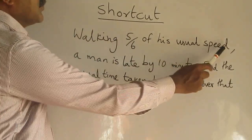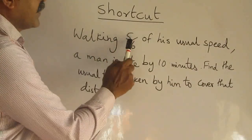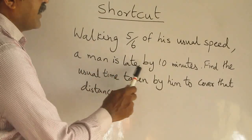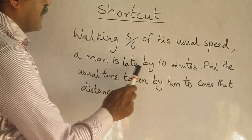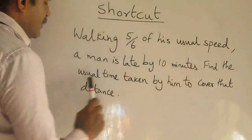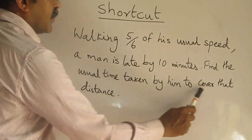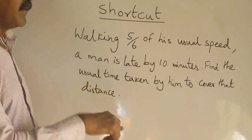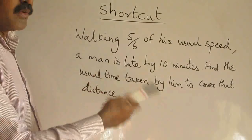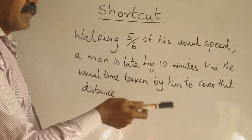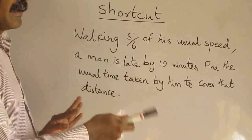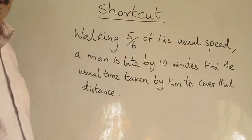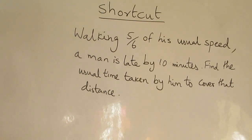Walking 5/6 of his usual speed, a man is late by 10 minutes. Find the usual time taken by him to cover the distance. Usually, this question can be solved using usual speed and usual time, comparing speed and time — they are inversely proportional. How to do this question using shortcuts?